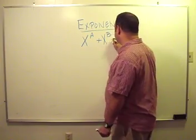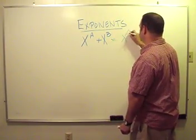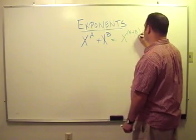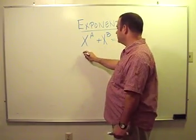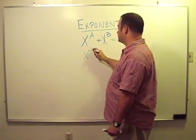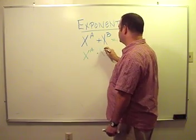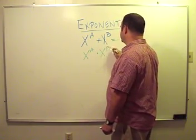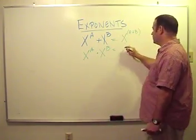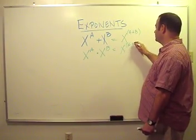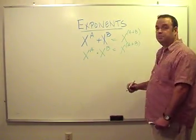However, a lot of people would put this one as x to the a plus b. But x to the a plus b is equal to x to the a multiplied by x to the b. And that equals the quantity x raised to a plus b.